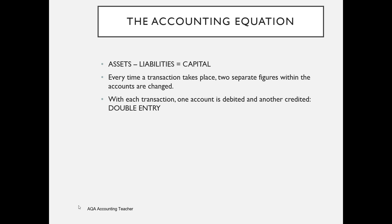The accounting equation — you should already know this if you've watched Lesson 1 — is that assets minus liabilities always equals capital. Assets are things owned by the business, liabilities are amounts owed by the business, and capital is the amount invested in the business by its owner. For a limited company, rather than capital, we would have equity — shareholders' funds rather than the owner's capital. Every time a transaction takes place, two separate figures within the accounts are changed: one account is debited and another is credited. That is the basic principle of double entry bookkeeping.